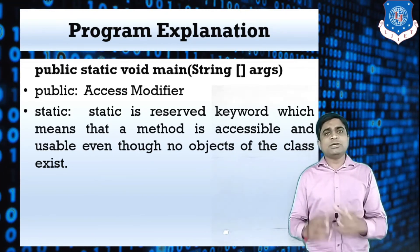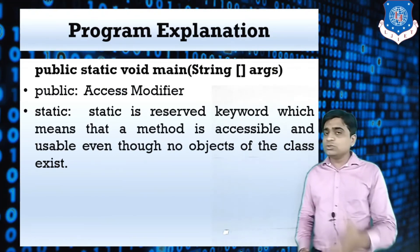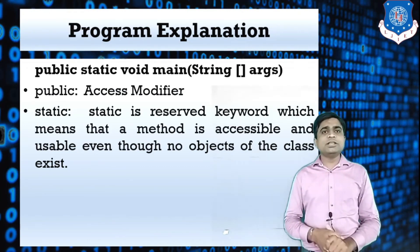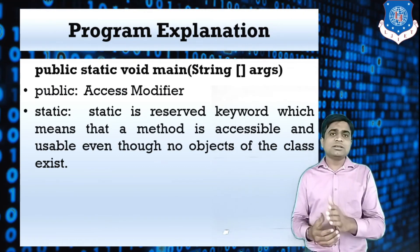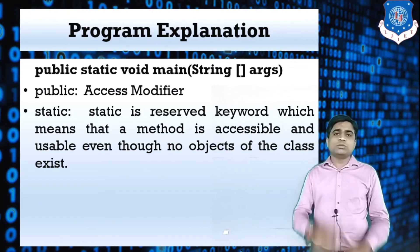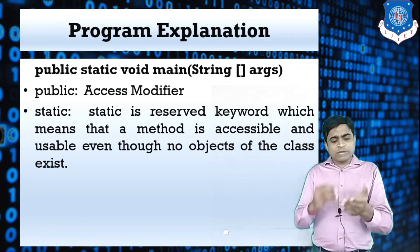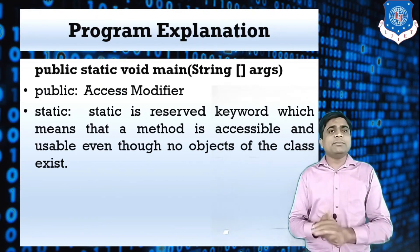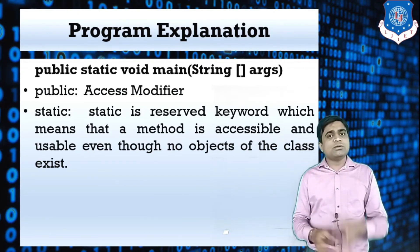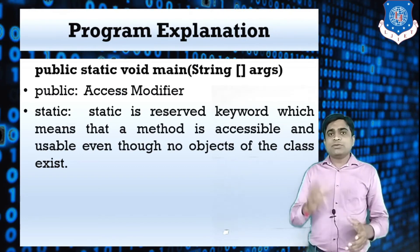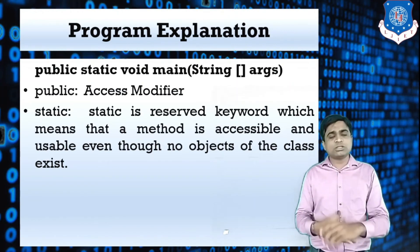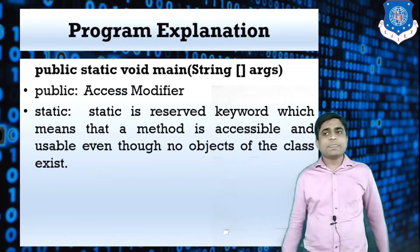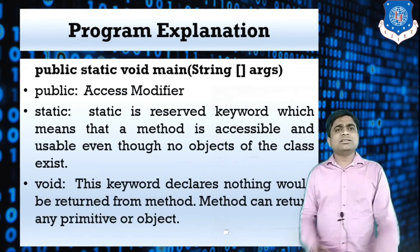The next keyword is static. Static is a reserved keyword meaning the method is accessible and usable even when no object of the class exists. Normally, to access data of a class, you create an object of that class. But if a method is declared static, you don't need to create an object. When running a Java program with just one class, we need static so that the main method can be called without creating an object. Not writing static will raise an error.